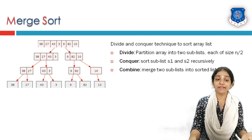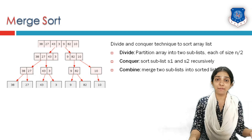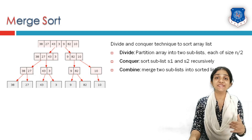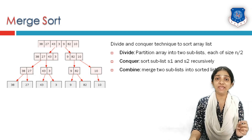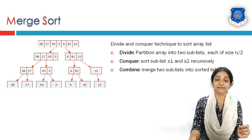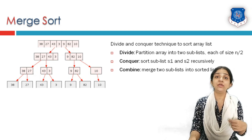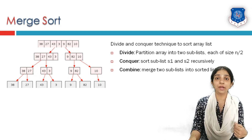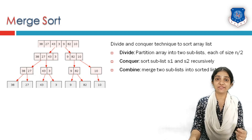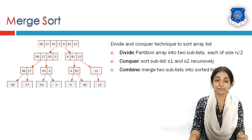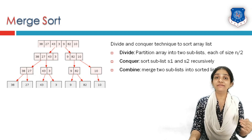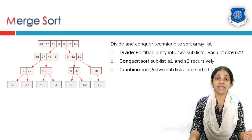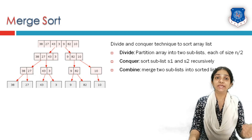At this stage, each and every sublist contains exactly one element — not more than one element inside it. So now we will proceed to the combine stage.